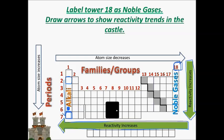Noble gases — which is what I want you to label family 18 — are the most stable elements on the periodic table because of the number of valence electrons they have. They're very stable, very non-reactive, and very easy to find in their pure state in nature. You'll find pure helium used in balloons, and neon is commonly used in lights for advertisements. Check out this short clip showing what the different colors of these elements look like when you pass electricity through them.